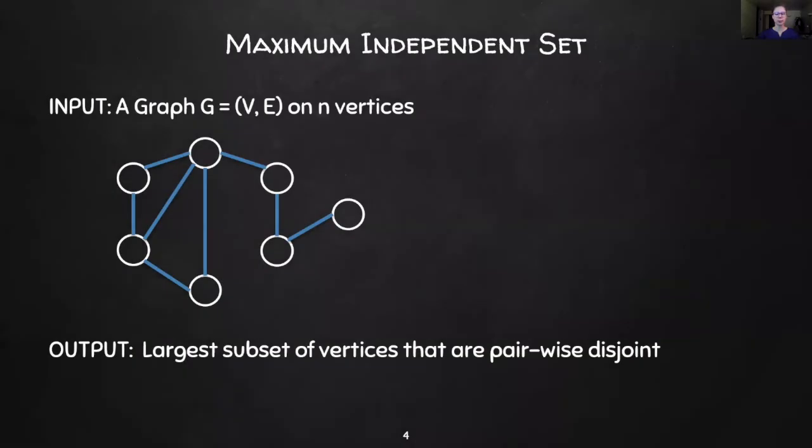Here we are given as input a graph G on n vertices and the goal is to compute the largest subset of vertices that are pairwise disjoint, meaning there are no edges between any two vertices in this set. In our toy example, the maximum independent set is these four shaded nodes.